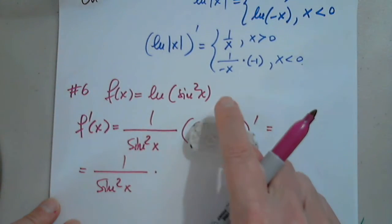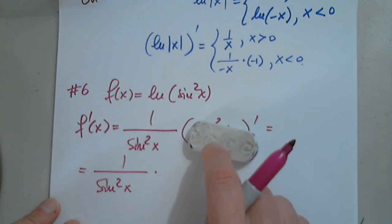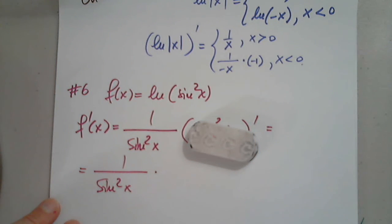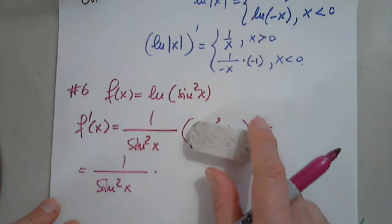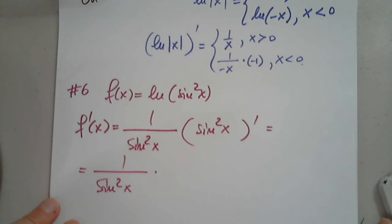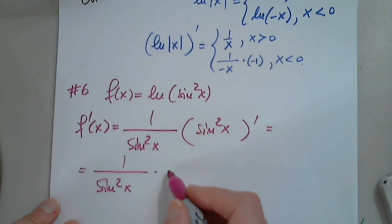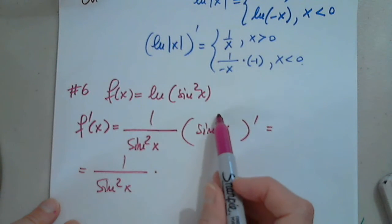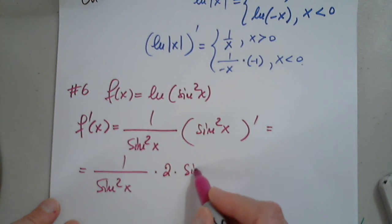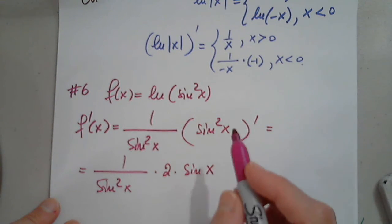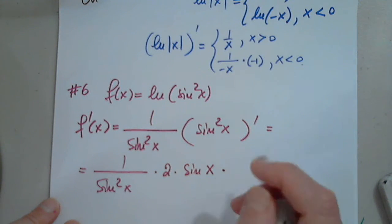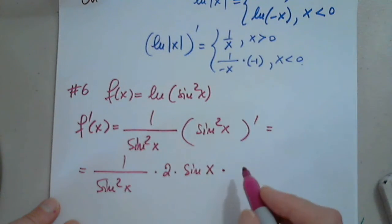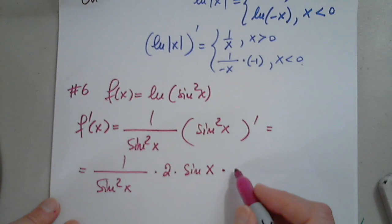I have a function raised to a power. How do I differentiate a function raised to a power? You pull the power down, so it's 2 times sine x to the 2 minus 1 times the inner function prime, which is cosine x.